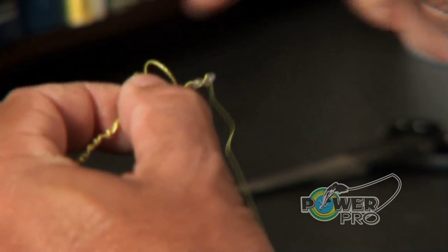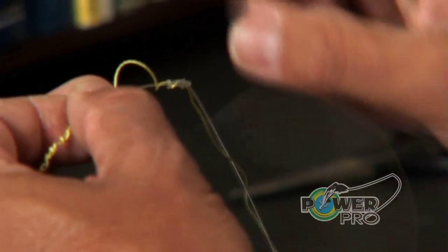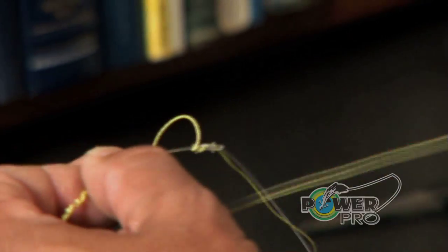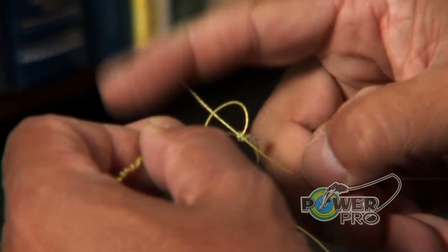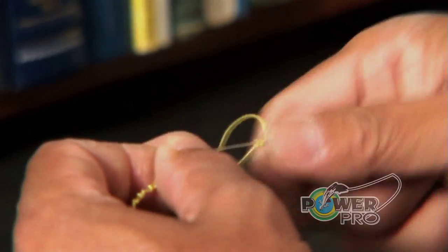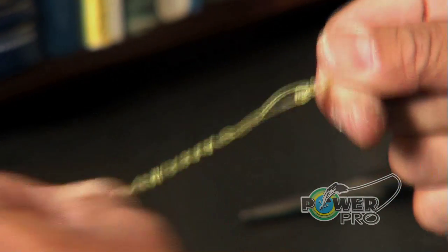...you take the tag end of the Power Pro, and you put it through the loop that you saved earlier. And you snug it back. And you pull it all back.